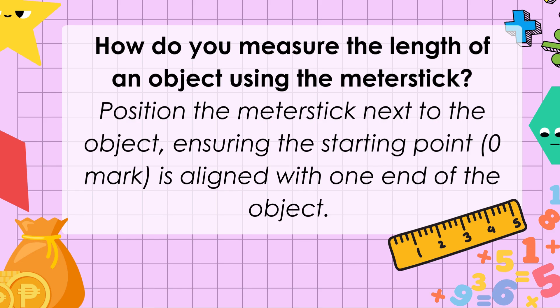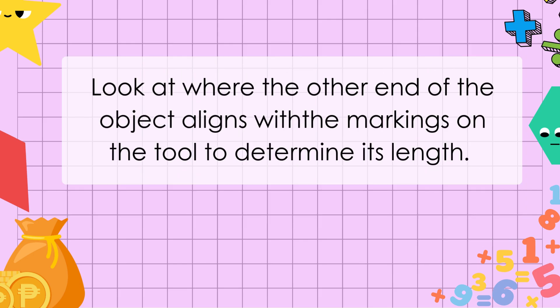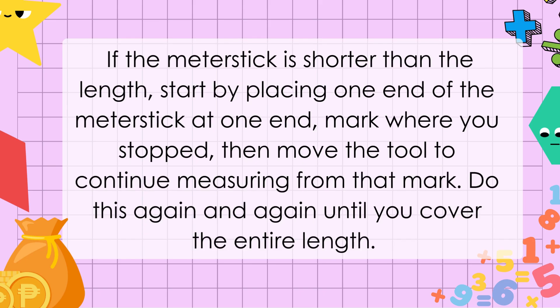How do you measure the length of an object using the meter stick? Position the meter stick next to the object, ensuring the starting point, which is 0, is aligned with one end of the object. Look at where the other end of the object aligns with the marking on the tool to determine its length. If the meter stick is shorter than the length, start by placing one end of the meter stick to one end, mark where you stopped, then move the tool to continue measuring from that mark. Do this again and again until you cover the entire length.